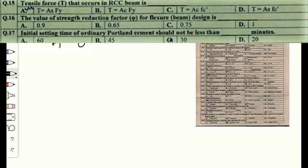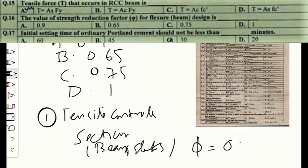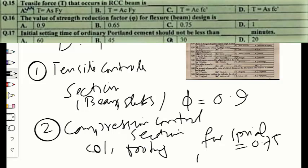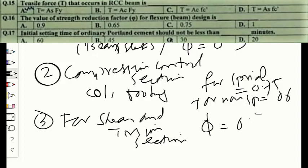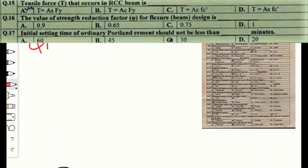Question number sixteen: the strength reduction factor for flexure beam design is option A — 0.9, option B — 0.65, option C — 0.75, or option D — 1. The strength reduction factor introduces safety in design. For tension-controlled sections such as beams and slabs, ACI specifies φ = 0.9. For compression-controlled sections (columns/footings), φ = 0.75 for spiral and 0.65 for non-spiral. For shear and torsion, φ = 0.75. The correct option is A — 0.9.